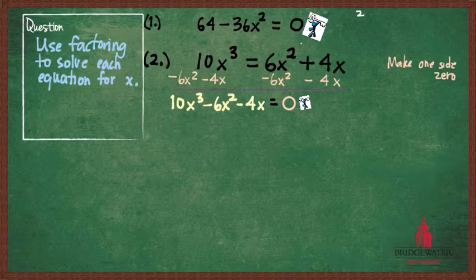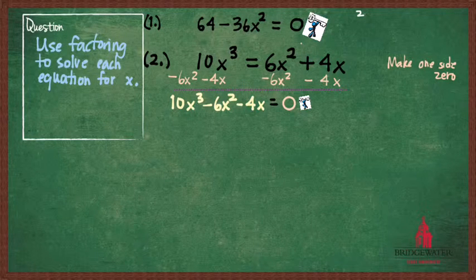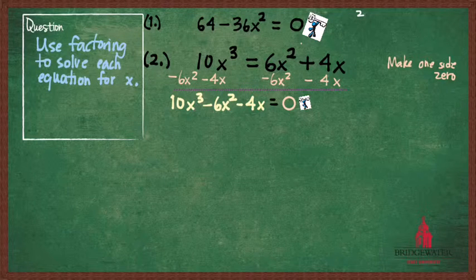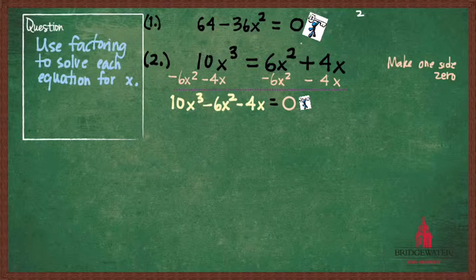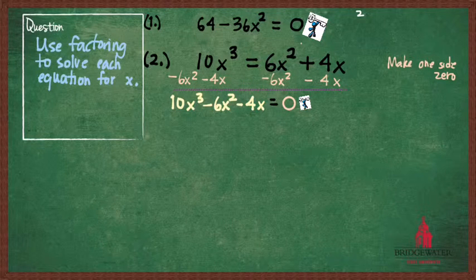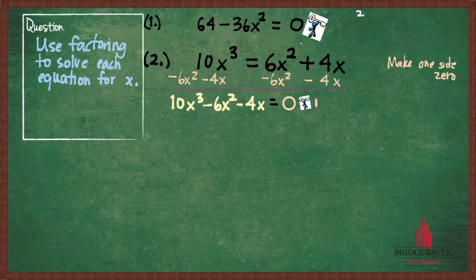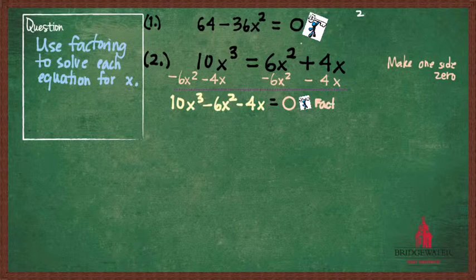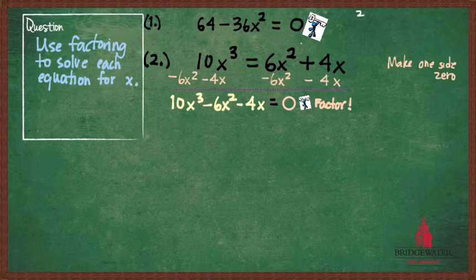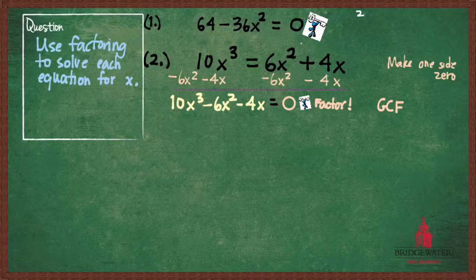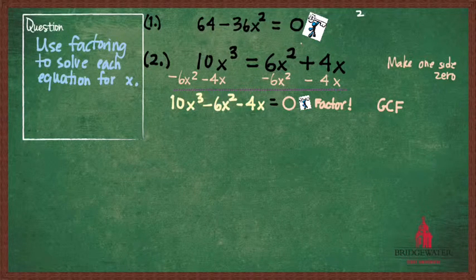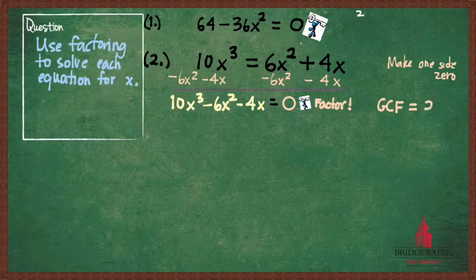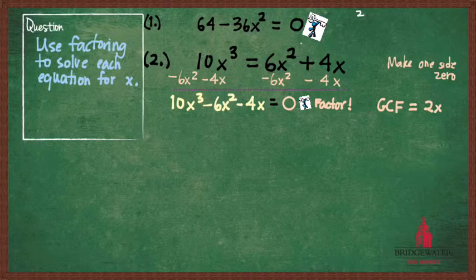So again, that zero is the sine qua non. It's what we need. Without that, we can't get anywhere as far as using factoring. But now that we have that zero, that should throw open Pandora's box for us to think about how to factor the other side. If I want to factor the other side, what do you want to look for first? Great. I want to look on the left-hand side for the greatest common factor of those three terms.